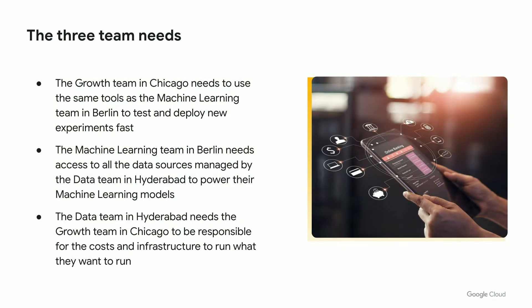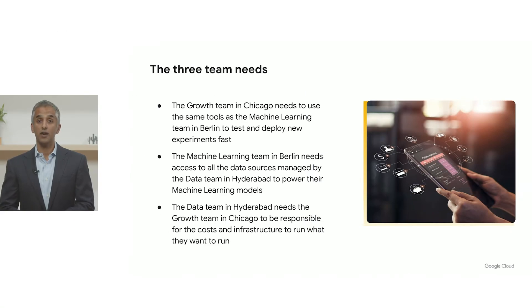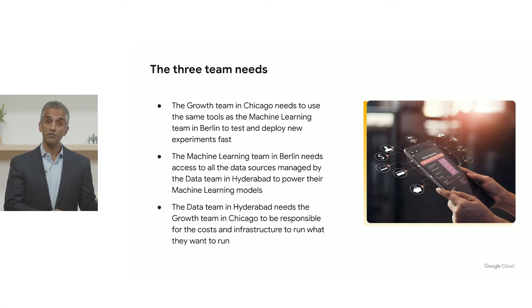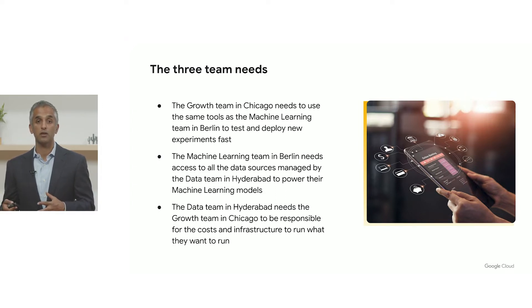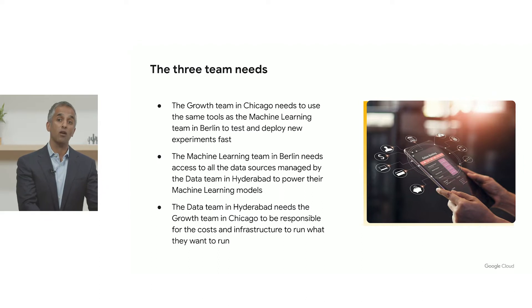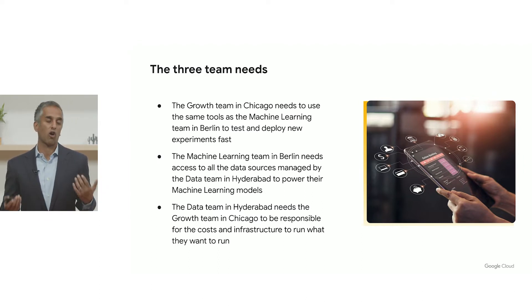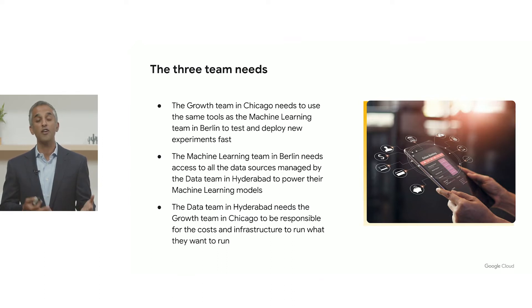The growth team in Chicago needs to use the same tools as the ML team in Berlin and the data team in India. The machine learning team in Berlin needs access to all of the data sources managed by the data team in Hyderabad to power the machine learning models — no machine learning model is good without great data. And the data team in Hyderabad needs to work with the growth team in Chicago and the machine learning team in Berlin to make sure they have access to what they need data-wise, but they don't want to be responsible for the cost or the infrastructure of all of this data integration and processing. They're data experts, not infrastructure experts.